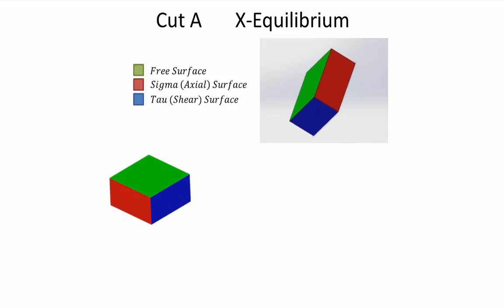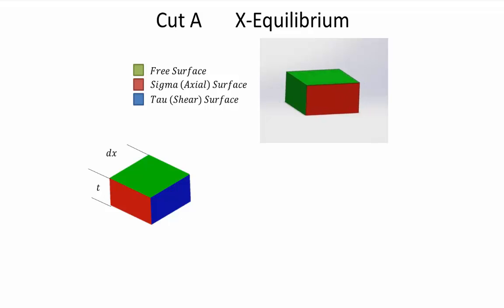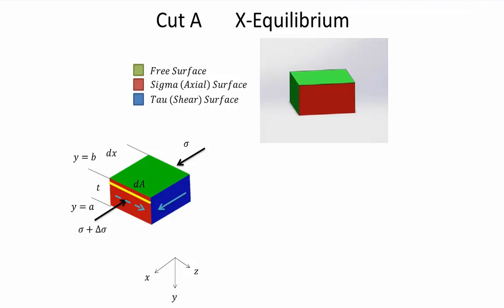Here's another view of the same section from a fixed perspective. It has a width dx and a thickness t, and we're going to be looking at incremental areas along the red faces of this section, with a height going from A to B. On the back face we have sigma, and on the front face, sigma plus d sigma. On the blue face we have tau, and opposing it on the red face, also tau. Tau is averaging constant over the blue face, but sigma varies over the red faces.